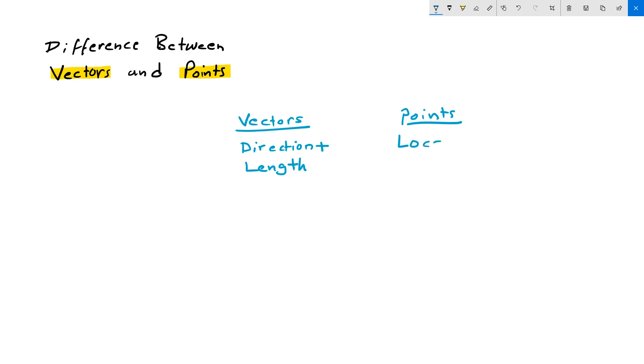Points are locations in space. Vectors are abstract concepts, while points are geometry.